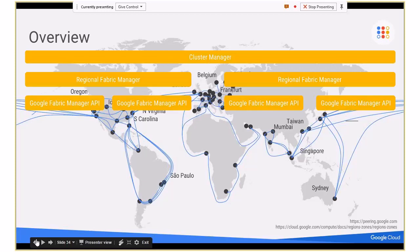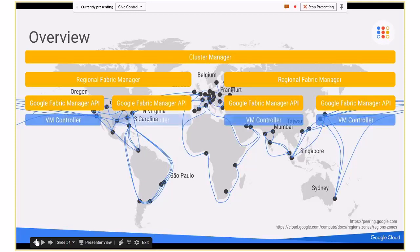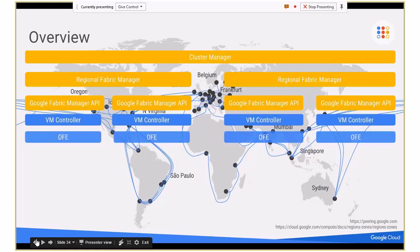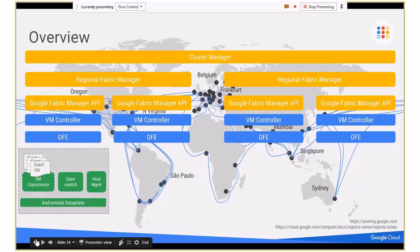Everything is split into regional, zonal, and cluster-level components. There's the regional fabric manager, which exposes an API to program the virtual networks. Below that, we have what we call VM controllers — this is where Andromeda starts. These are cluster-level managers that program OpenFlow rules to our OFEs. At the very bottom is a software-defined switch built into every host — our data plane — and we program it using OpenFlow.